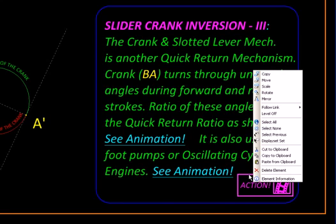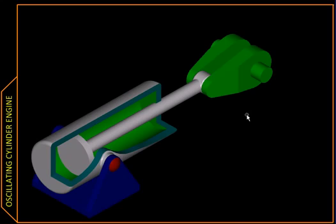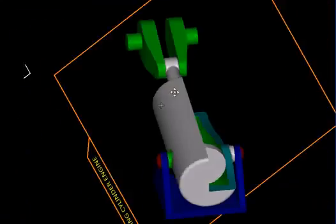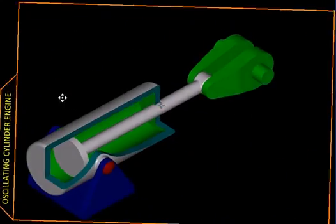Let us now go to another manifestation. We will follow the other link, and that takes us here. Over here we have what is called an oscillating cylinder engine.